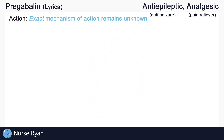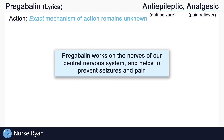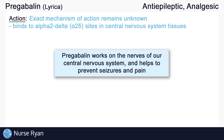The exact mechanism of action of pregabalin is actually still unknown. In very basic terms, pregabalin works on the nerves of our central nervous system to help prevent seizures and pain. It's not too important that we get really deep into the mechanism here, but if you're interested, pregabalin binds to the alpha-2-delta sites in the central nervous system tissues. Basically, it can be used for different nerve issues which we'll cover here.